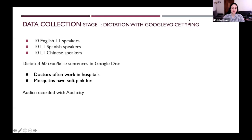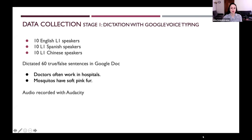We collected data in two stages. In stage one, there were 30 undergraduate and graduate students: 10 native speakers of English, 10 native speakers of Spanish, and 10 native speakers of Chinese. They filled in a questionnaire with demographic information and then dictated 60 sentences in English into Google Docs using the Google Voice Typing feature. These sentences were the same as those used in Derving et al. 2000 — five to eight words long, deliberately constructed true or false statements with high frequency words and simple syntax. Speakers' voices were also recorded using Audacity at the same time.